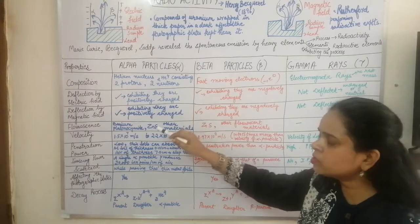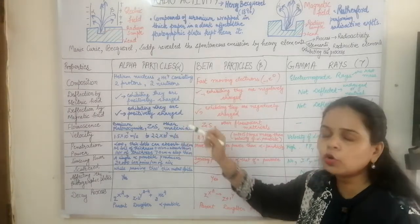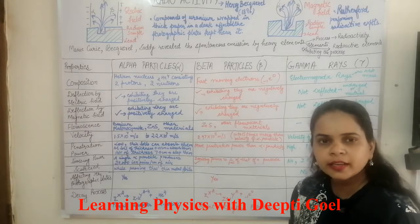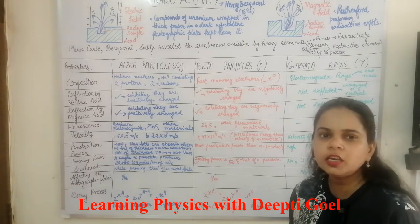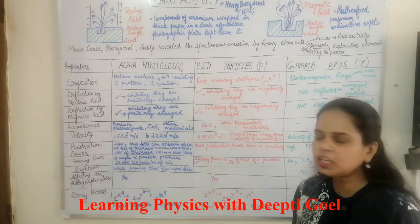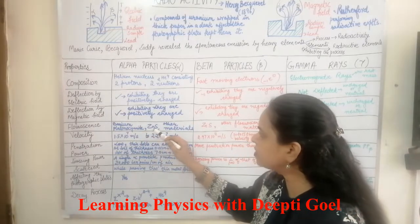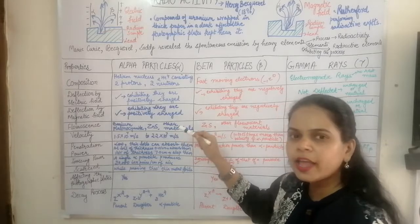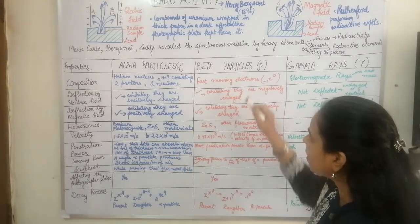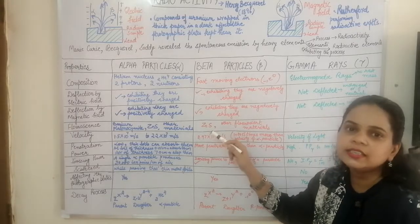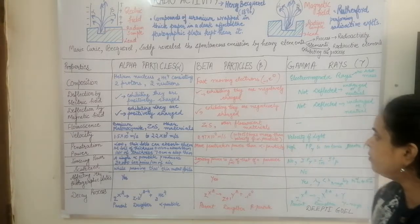The fourth property is fluorescence. Both alpha and beta particles are capable of producing scintillation on fluorescent materials such as barium platinocyanide or zinc sulfide screens. Beta particles also show fluorescence on zinc sulfide and other fluorescent materials.